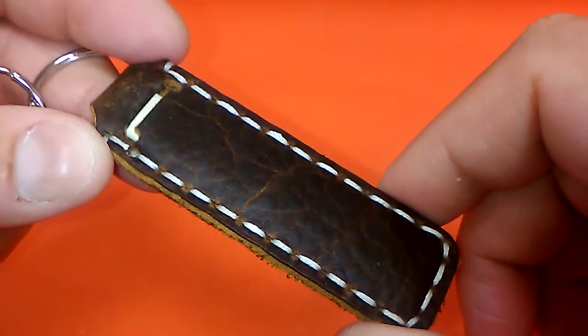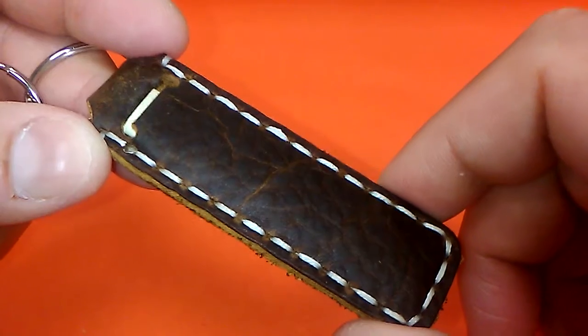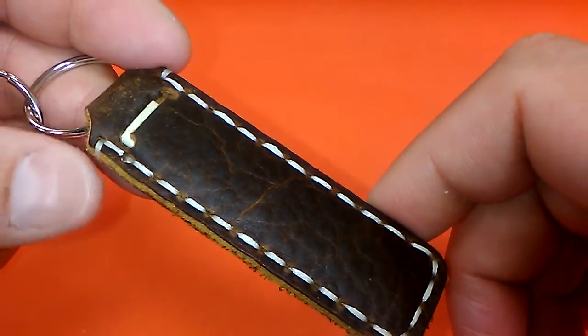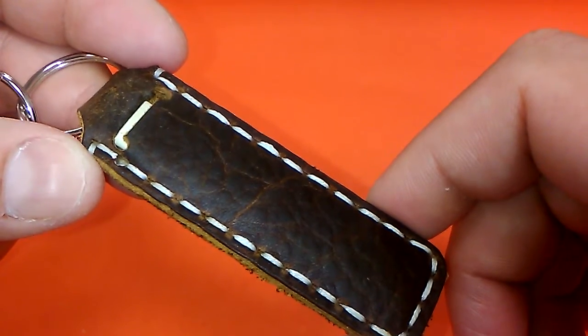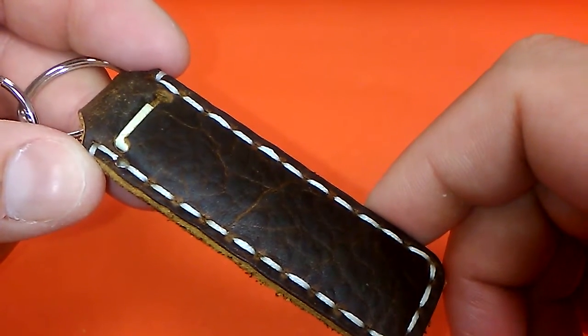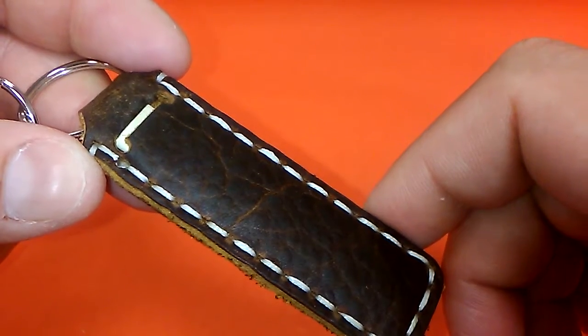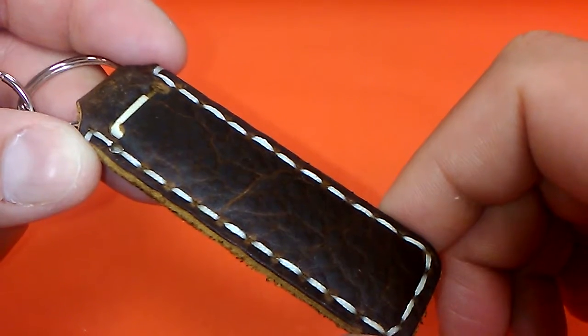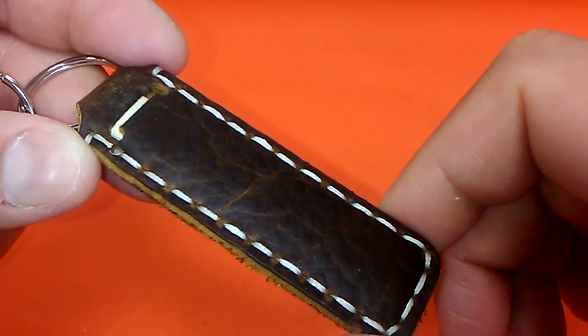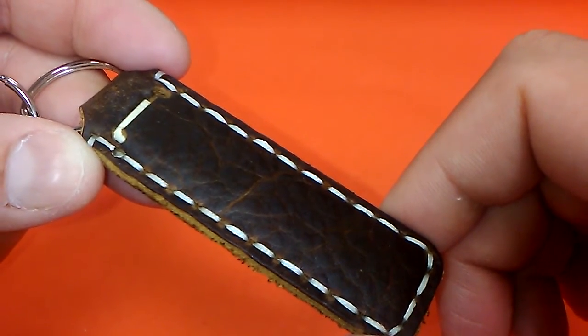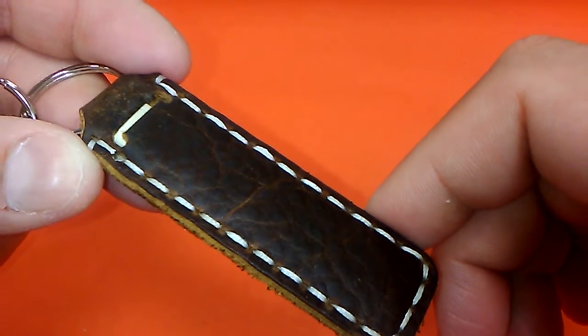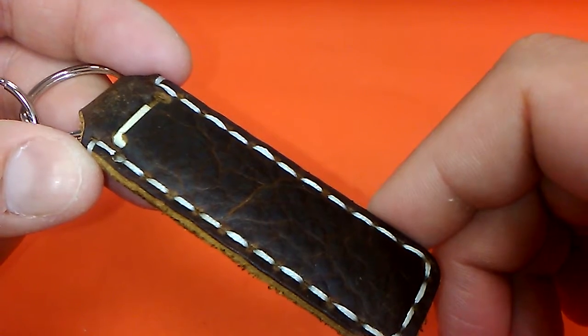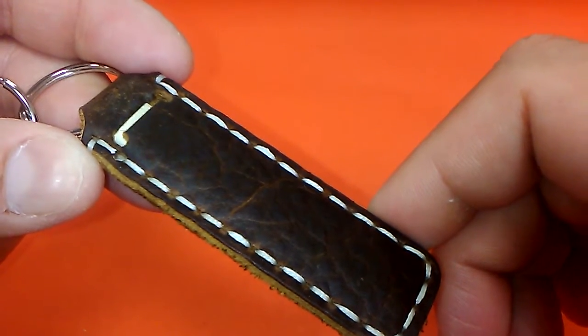Now this works best if you have a brand new, clean, crisp bill. Used bills, which are extremely soft, that's going to be a problem getting them to fit all the way in here once you've folded them over several times. So just go to the bank, get yourself from the teller a clean, crisp, brand new $20, $50, or $100 bill.